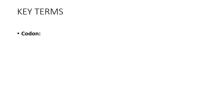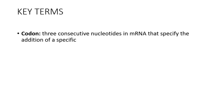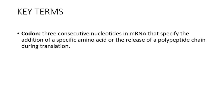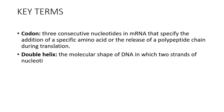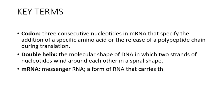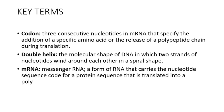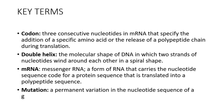Here are the key terms. Codon: three consecutive nucleotides in mRNA that specify the addition of a specific amino acid, or the release of a polypeptide chain during translation. Double helix: the molecular shape of DNA in which two strands of nucleotides wind around each other in a spiral shape. mRNA (messenger RNA): a form of RNA that carries the nucleotide sequence code for a protein sequence that is translated into a polypeptide sequence. Mutation: a permanent variation in the nucleotide sequence in a genome.